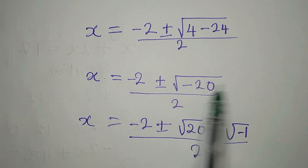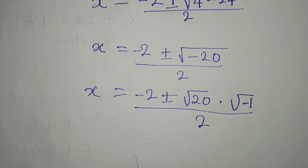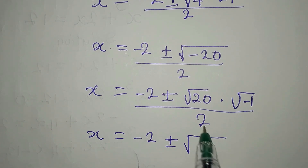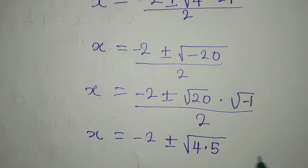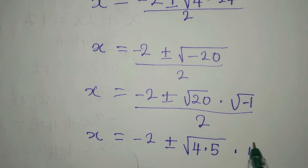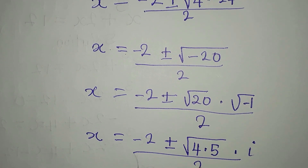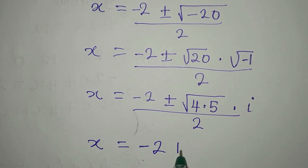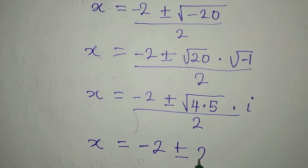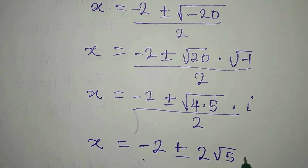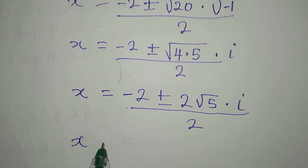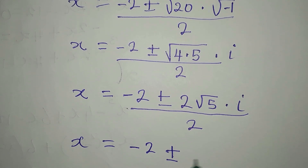We write 20 as 4 times 5, so square root of 20 becomes square root of 4 times square root of 5, which is 2 root 5. And square root of negative 1 is i. So we have x equals minus 2 plus or minus 2i root 5, all divided by 2.